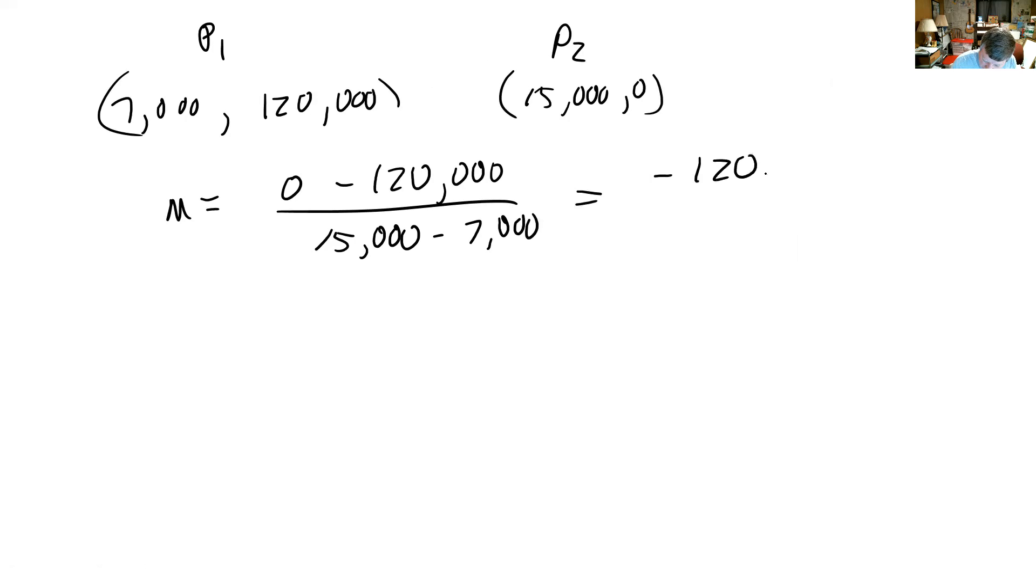which is negative 120,000 over 8,000, which is negative 15 pounds per mile.